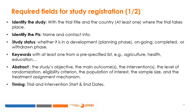The contents of a study registry include: identifying the study with a title and specifying the country where the study takes place; identifying the PIs with name and contact information; identifying the study status — for instance, in development, planning phase, ongoing, completed, or withdrawn; providing keywords with at least one from a pre-specified list; and providing an abstract with the study's objective, main outcomes, interventions, levels of randomization, eligibility criterion, population of interest, sample size, and the treatment assignment mechanism.